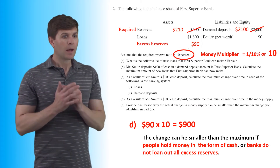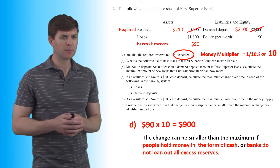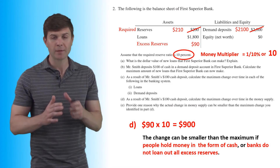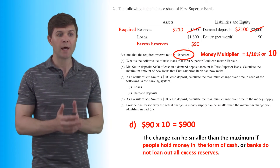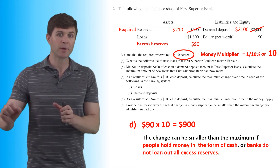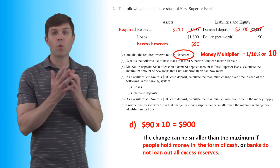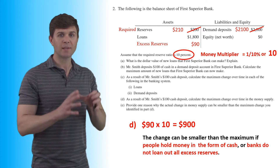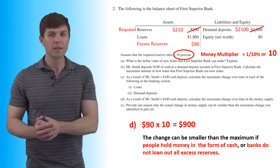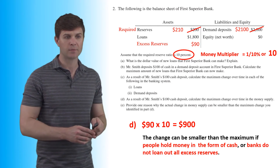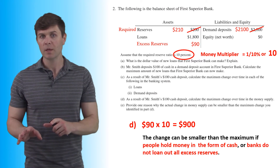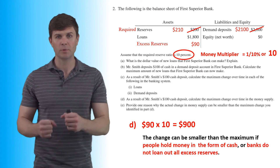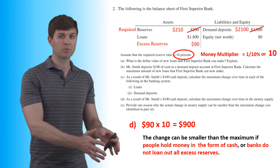Part E asks for one reason why the actual change in the money supply can be smaller than the maximum calculated in Part D. There are two possibilities: first, if people hold money as cash — in a cookie jar, wallet, or home safe — it's not in the banking system and doesn't go through the money multiplier. Second, if banks don't loan out all of their excess reserves, that also decreases the money multiplier, so the $100 might turn into less than $1,000.